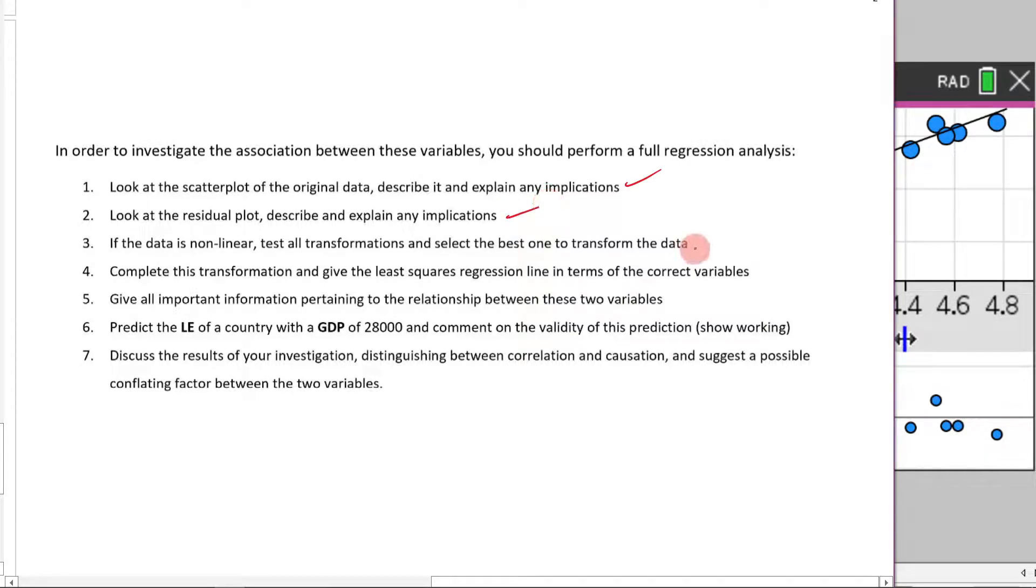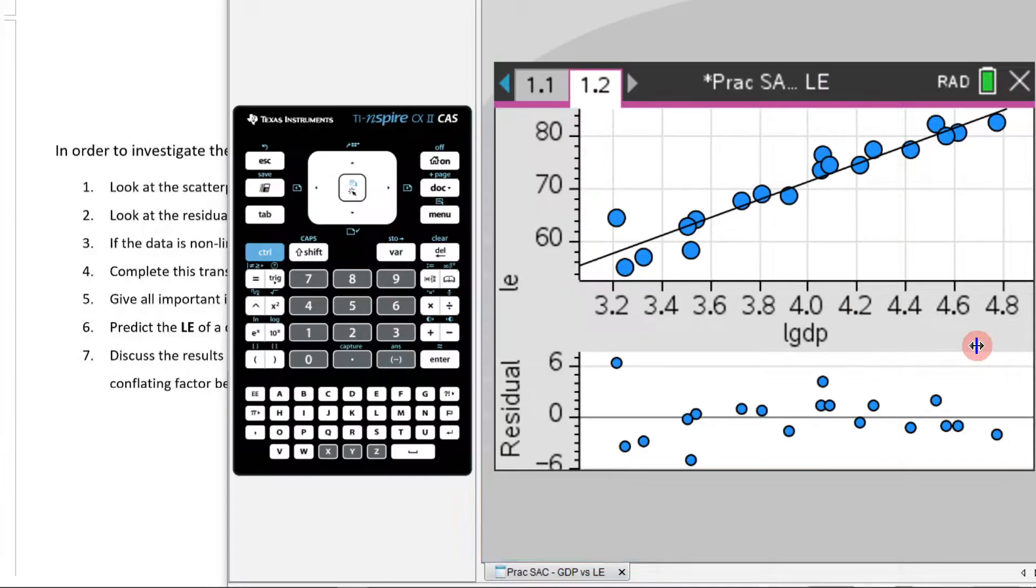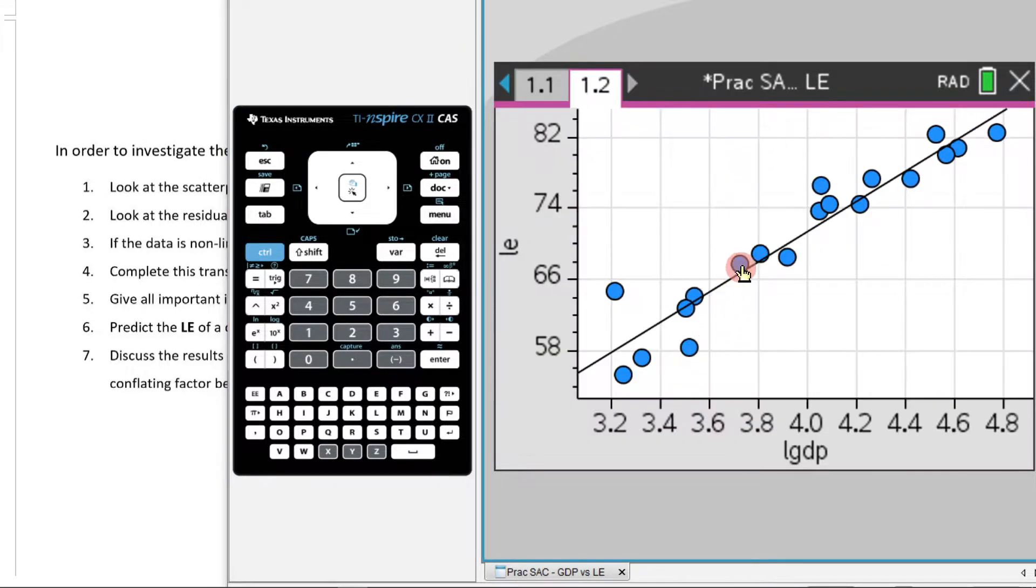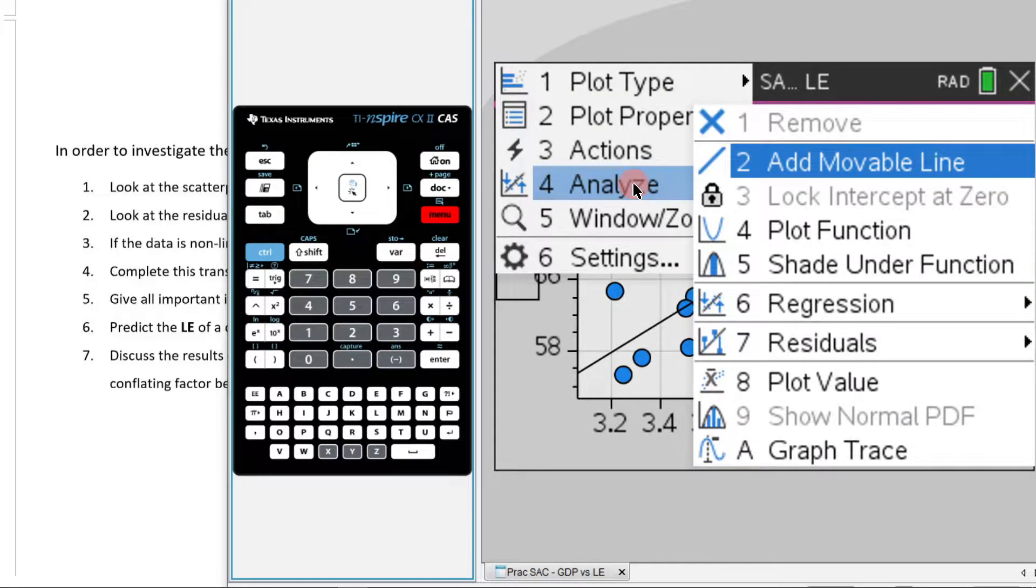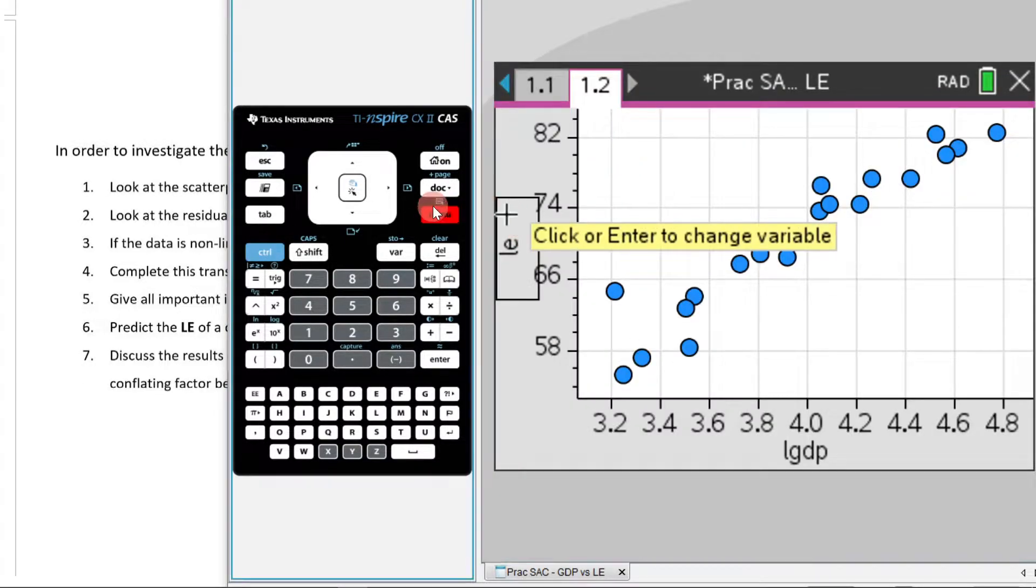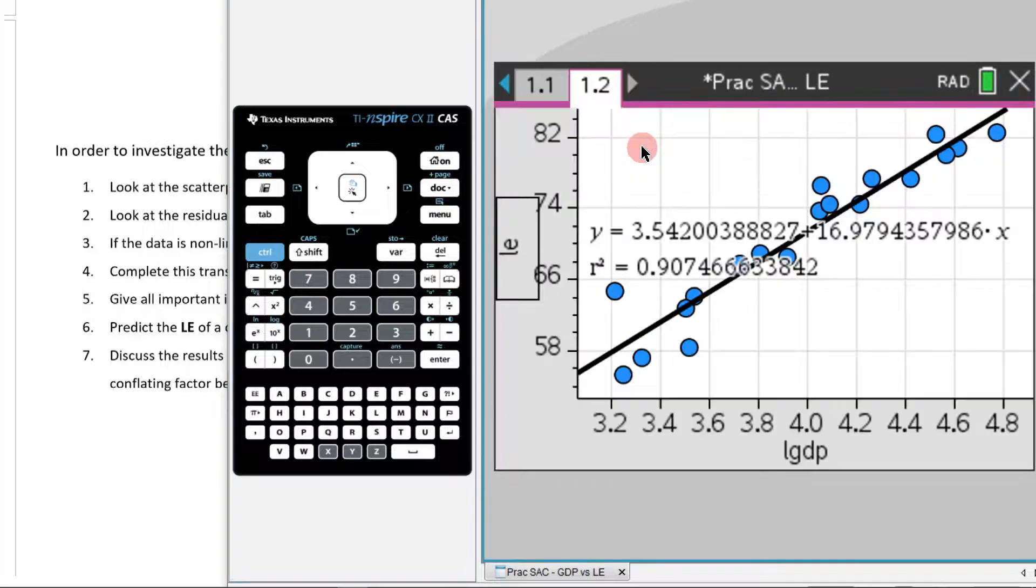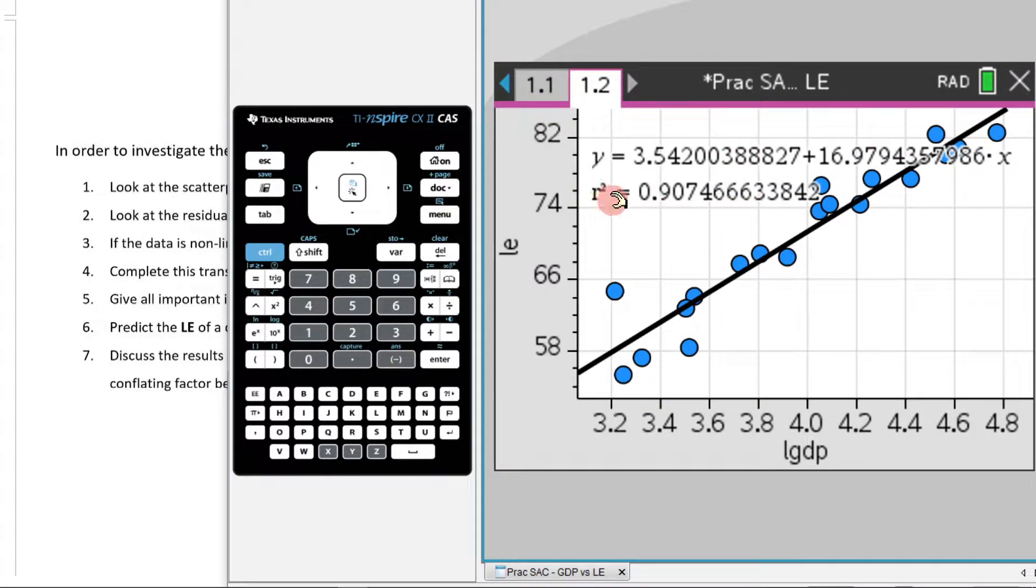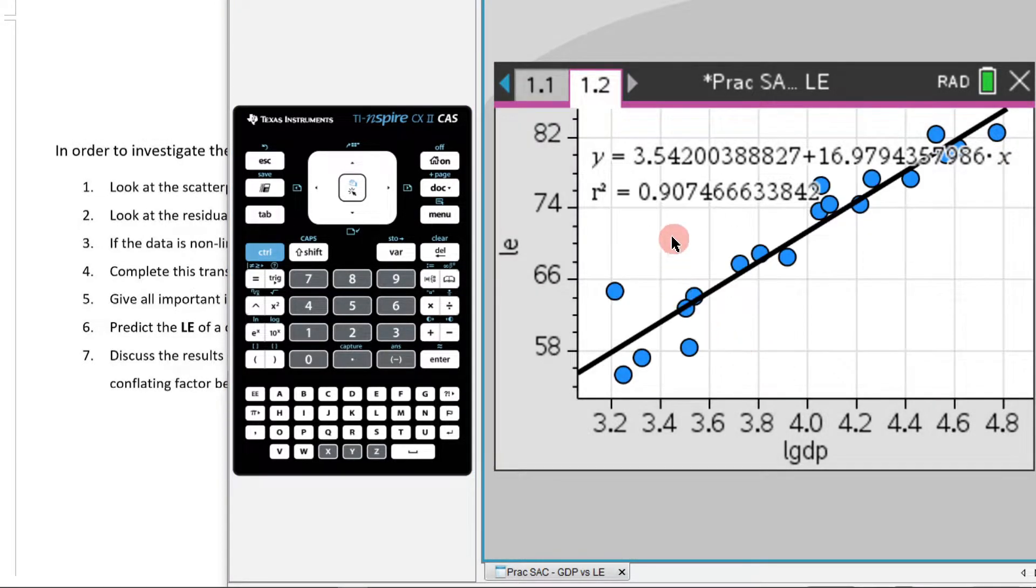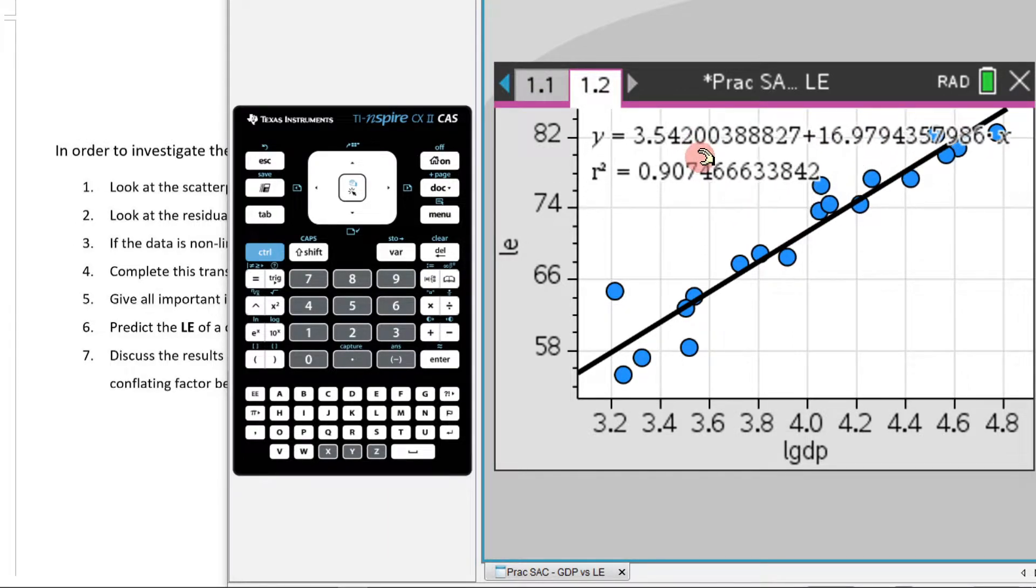We did the residual plot, we performed our transformations, and now we need to complete this transformation and give the least square regression line in terms of the correct variables. So to do that, what we're going to do is jump over here. I don't need to look at my residual plot, so let's just hide the residual plot, but I need to figure out what my least square regression line is going to be. We could just go regression. If I go show linear A plus BX, there it is. You might be asking yourself, how is it that I've got this R square value also appearing with it? All that I've done is I've gone menu, settings, and then I've gone diagnostic. If you click diagnostic, it just includes it with it, and I find it very useful to have it there with me.